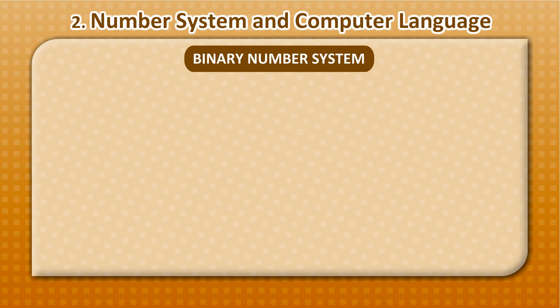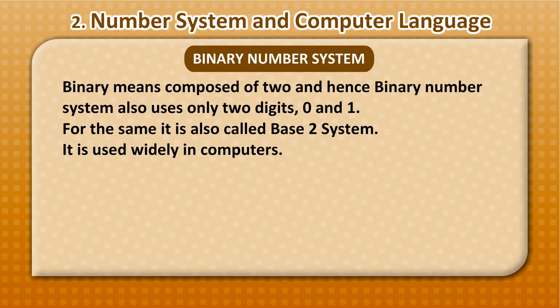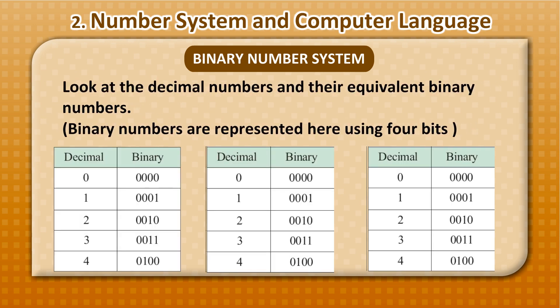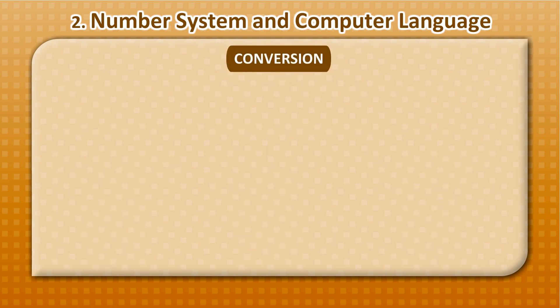Binary means composed of 2, and hence, binary number system also uses only 2 digits, 0 and 1. For the same reason, it is also called base 2 system. It is used widely in computers. Look at the decimal numbers and their equivalent binary numbers. Binary numbers are represented here using 4 bits. Decimal 0 is binary 0000, 1 is 0001, 2 is 0010, 3 is 0011, 4 is 0100.